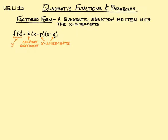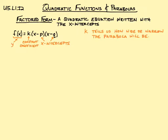So the k tells us how wide or narrow the parabola will be. Each quadratic function can correspond to an infinite number of parabolas that go through the same two x-intercepts, but the k is going to identify if it's a tall and skinny parabola or a short and wide one. So k is really important to determine when looking at quadratic functions.